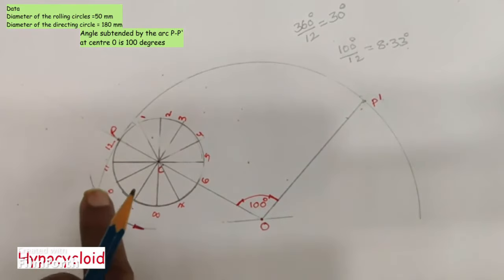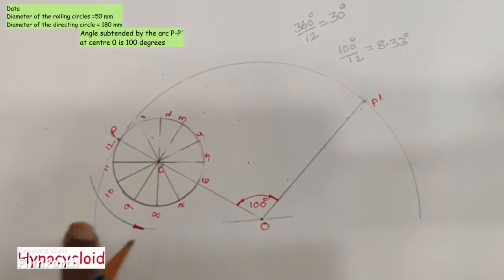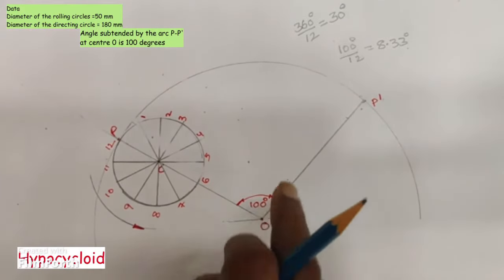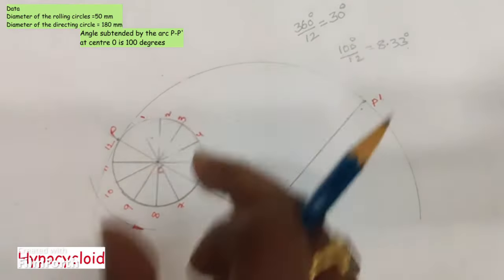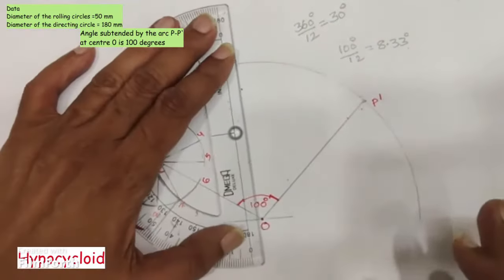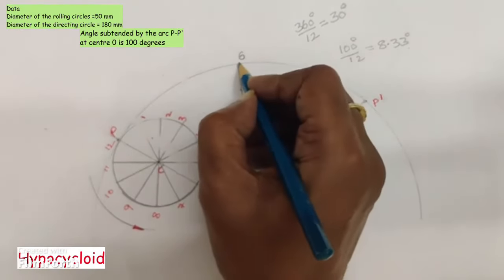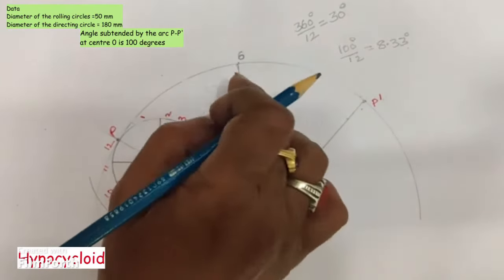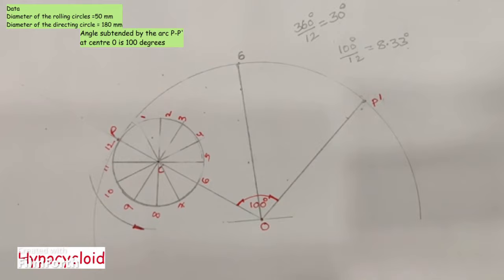As a first step under the trial and error method, divide arc PP' into two equal parts. The total angle subtended by arc PP' at center O is 100 degrees. Dividing it into two equal parts gives each part 50 degrees. We will first divide arc P6 into six equal parts by trial and error, and then divide arc 6P' also into six equal parts.